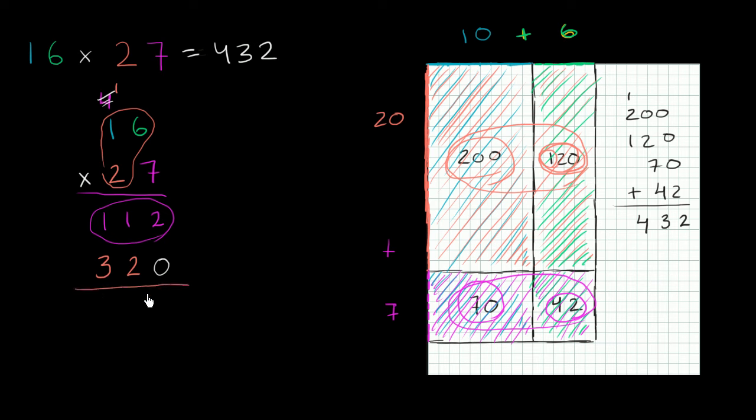And then this step right over here, you're literally just finding the combined area, the area of this plus the area of that. So that's going to get us to, we deserve a drum roll now, 2 plus 0 is 2, 1 plus 2 is 3, 1 plus 3 is 4. 432.